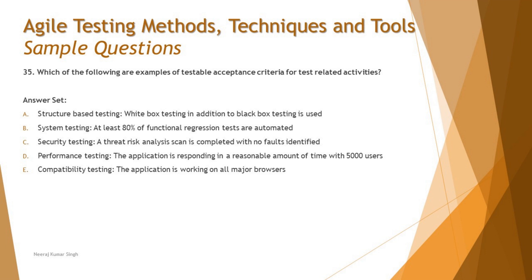Option D says performance testing: the application is responding in a reasonable amount of time with 5000 users. The problem is 'reasonable' is not specific or precise. I'd need to ask the business what 'reasonable' means — less than or equal to three seconds, or five seconds? Saying performance should be 'best in the world' is equally vague. This is a very vague acceptance criteria that cannot be tested as-is.